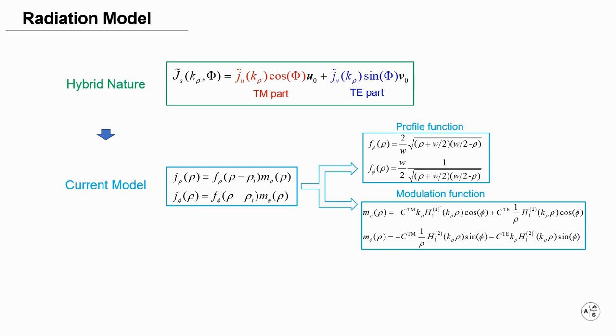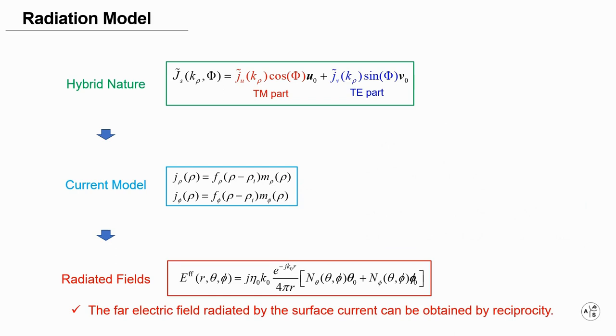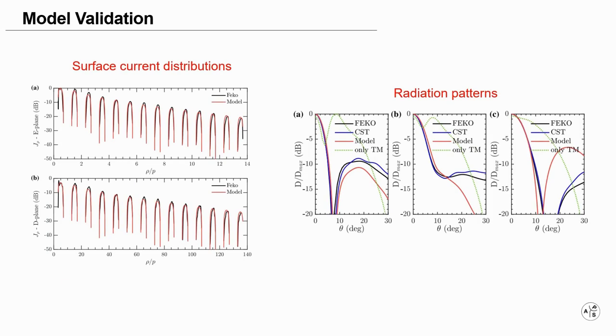The model consists of a profile function related to the current behavior inside the unit cell and a modulation function related to the cylindrical spreading of the waves along the antenna surface. Finally, the far electric field radiated by the surface current can be obtained by reciprocity.